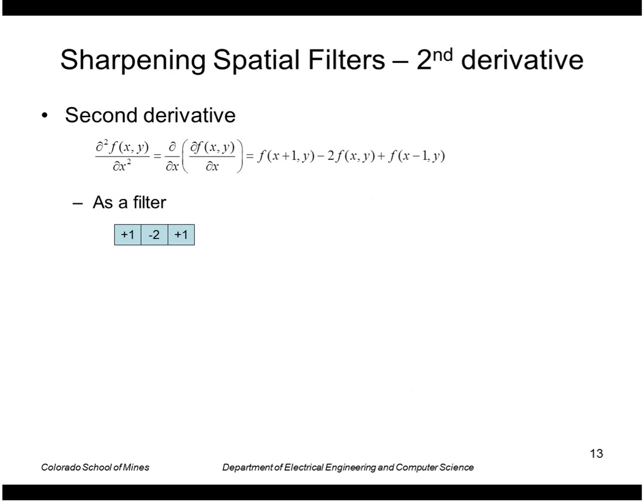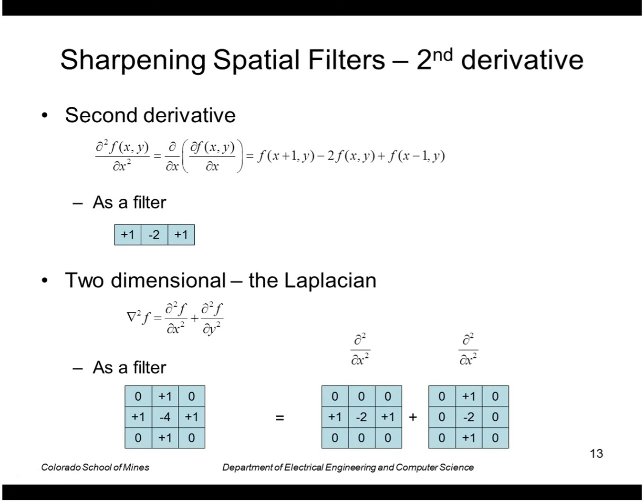Let's look at the second derivative operators. Second derivative of course is just the derivative of a derivative, so applying that operation twice gives me these discrete values here. We can represent that as a mask as well. The Laplacian is the sum of the second derivative in x plus second derivative in y. If I sum these two masks together I get the full filter here with a minus 4 in the middle and ones on the outside.